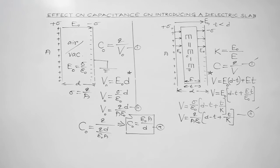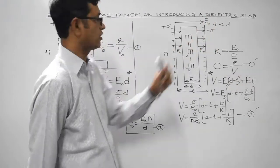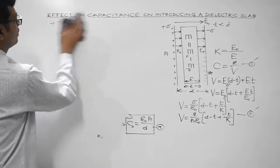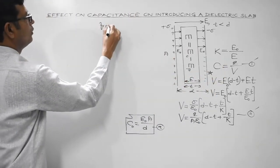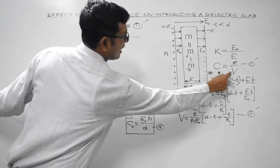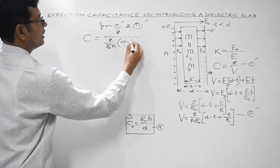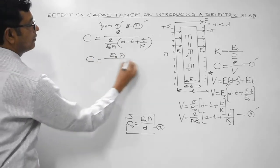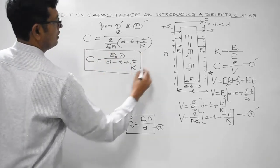Substituting the value of V into C = Q/V, we get C = Q divided by (Q/ε₀A)[D − T + T/K]. The Q terms cancel, giving us C = ε₀A/(D − T + T/K). This is the expression for the capacitance of a parallel plate capacitor when a dielectric slab of thickness T (less than D) is introduced in the space between its plates.